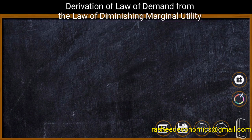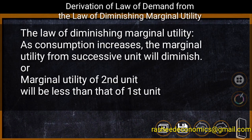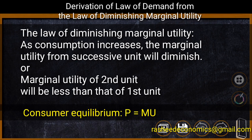As per the law of diminishing marginal utility, as consumption of a commodity increases, the marginal utility from successive units will diminish. That is, marginal utility of the second unit will be definitely less than that of the first unit. And in consumer equilibrium analysis of the cardinal approach, a consumer is in equilibrium when price is equal to marginal utility in case of an economic good.